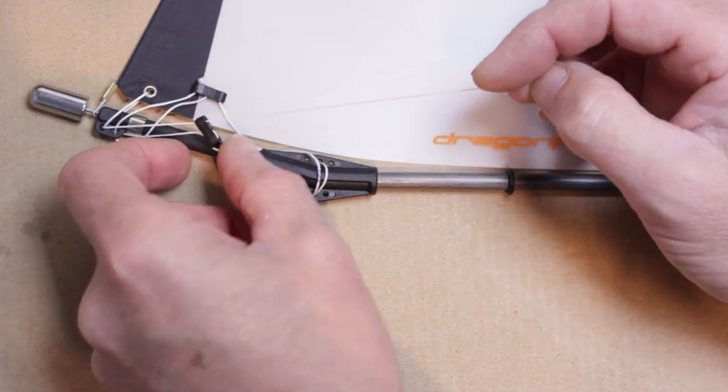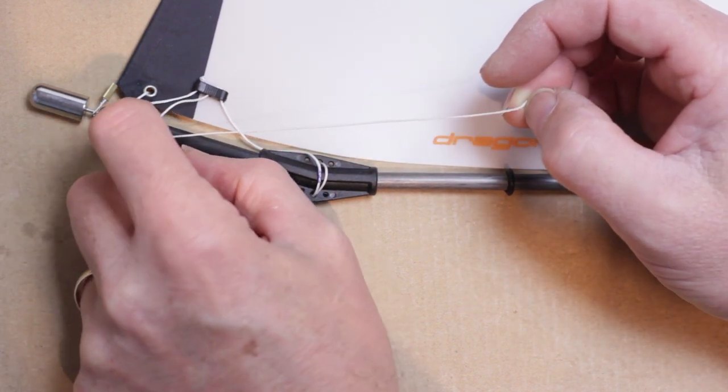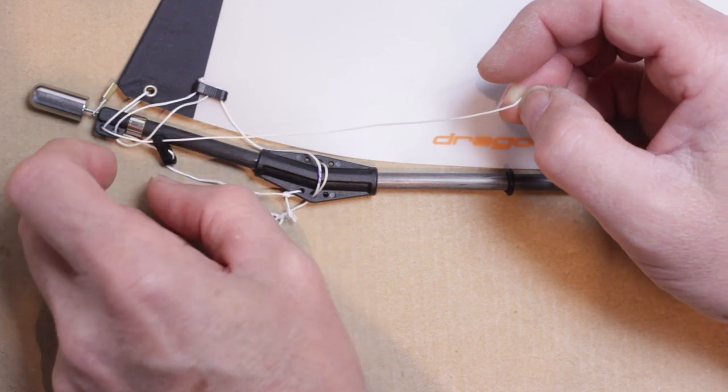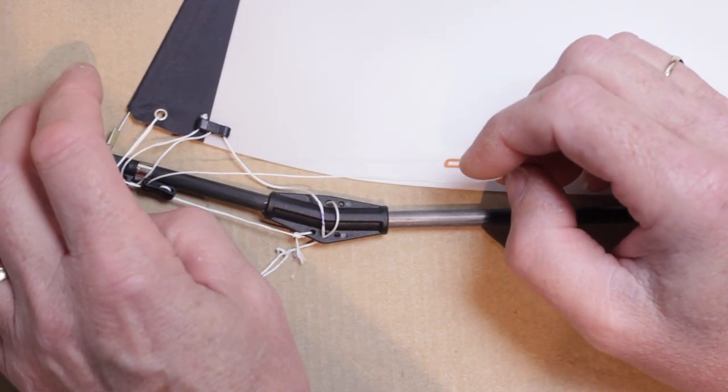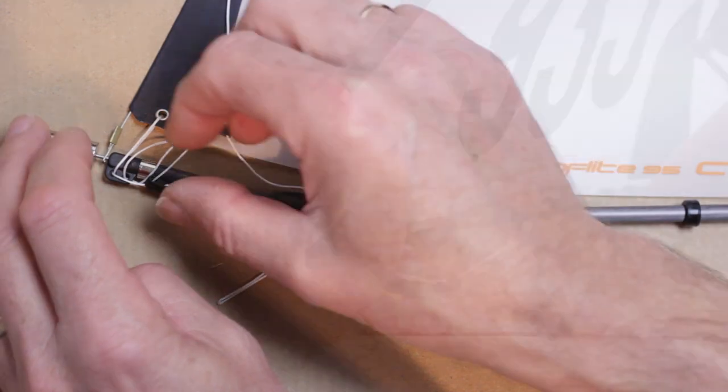Now tie off the bousy with a stopper knot. From experience it's best if these two lengths of dyneema can be different colors, so you can easily identify which one is the Cunningham and which one is the jib hook down.